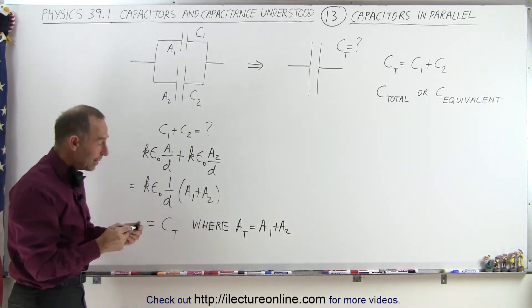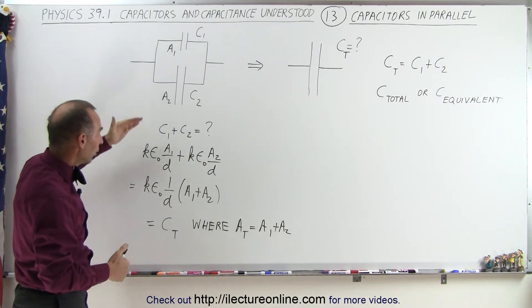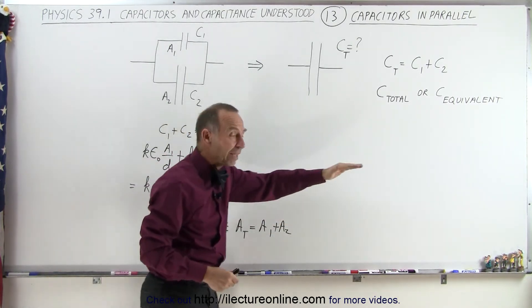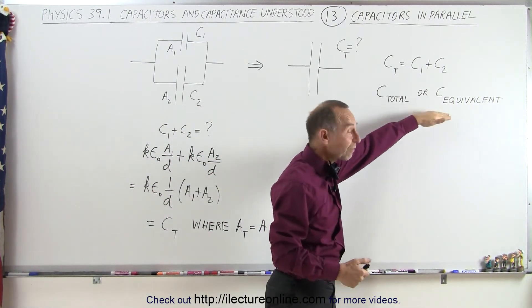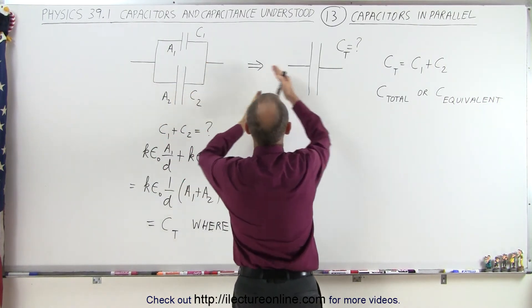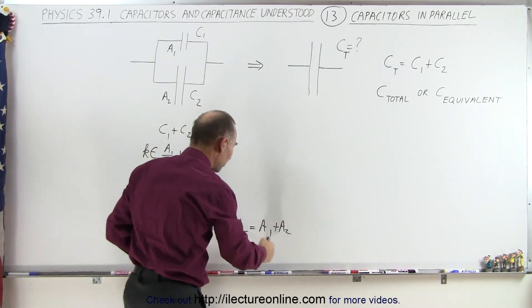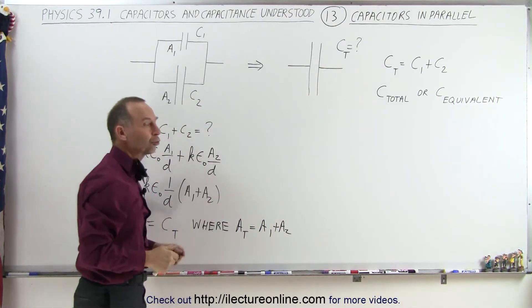And that is why we can say that when we put capacitors in parallel, the total capacitance—or as we sometimes say in circuitry, the equivalent capacitance—that if we could replace these two capacitors by a single capacitor, all we have to make sure is that this capacitance has the sum of the areas of the first two.